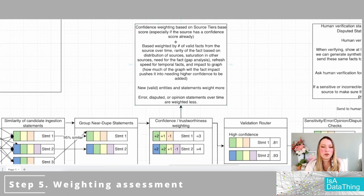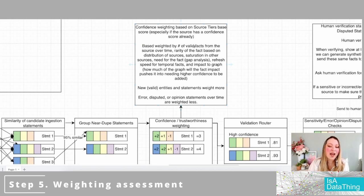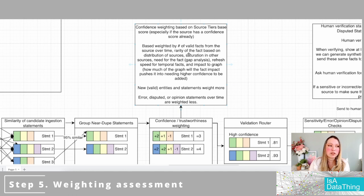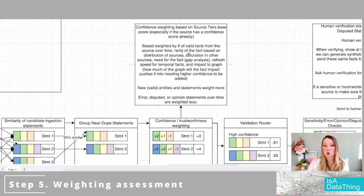The confidence weighting is based on source tiers — that's why that area is so important — especially the confidence scores you already have. You then base the weight on the number of valid, agreeing facts. We're not saying it's trustworthy yet, we're saying it's evidence-based. Rarity of a fact isn't necessarily negative. A groundbreaking statement in a research article may just need more corroboration from others citing it. If your graph has a statement nobody else has, that's actually not bad — it's a differentiator — you just need to make sure you can trust it.